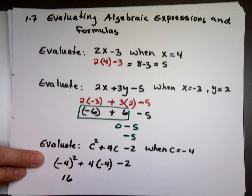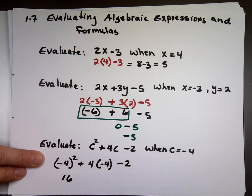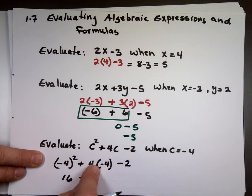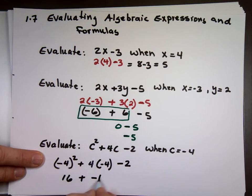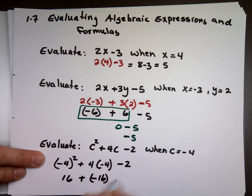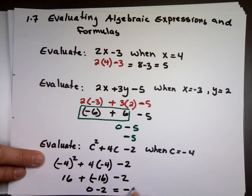Negative times the negative is positive. What's 4 times the negative 4? Positive times the negative. Negative 16. Minus the 2. What's 16 minus 16 or plus negative 16? 0. 0 minus a 2, which is negative 2.